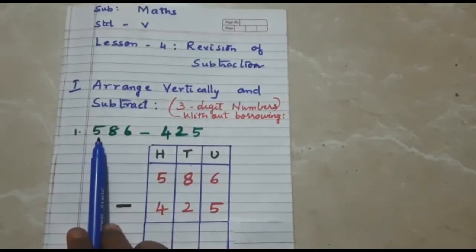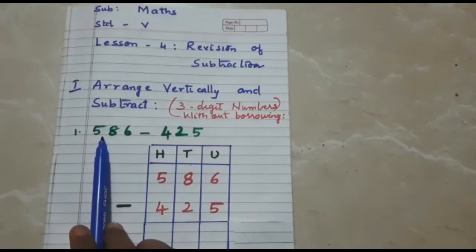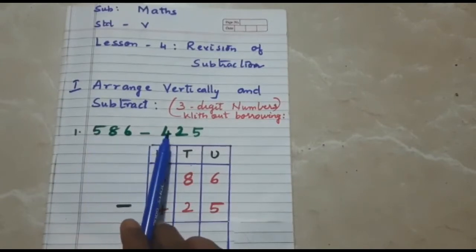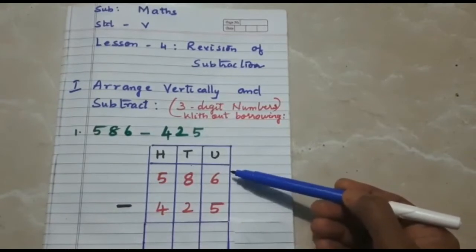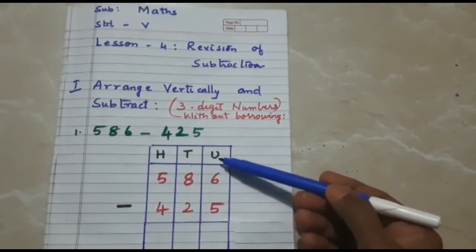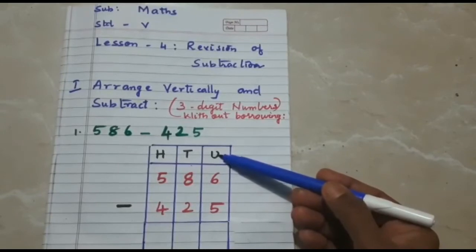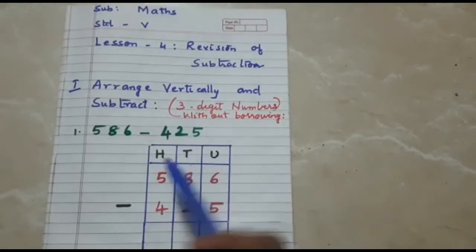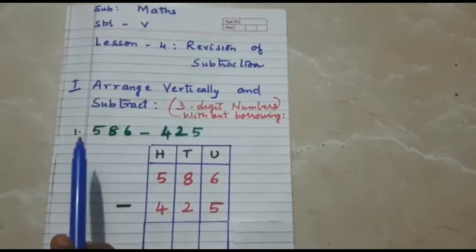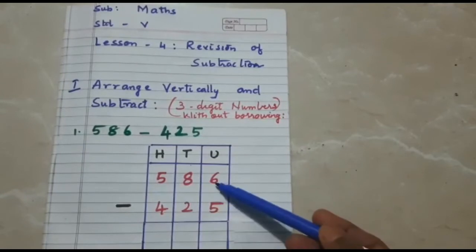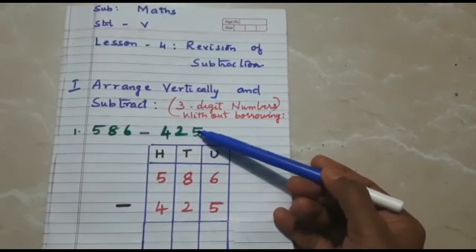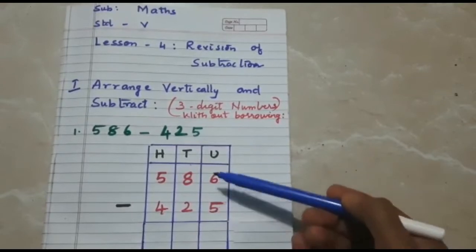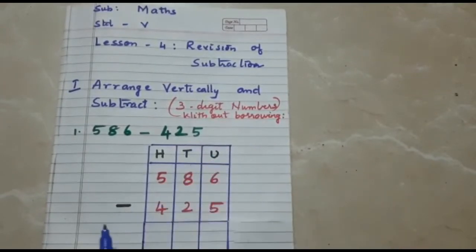My first question is 586 minus 425. The first thing we have to do is draw the columns with the help of pencil and ruler. Write the place value starting from units, tens, and hundreds. For 586, write the digits in the respective place value, and for 425, write the digits in the respective place value.